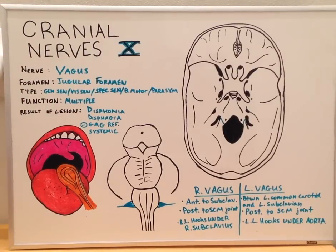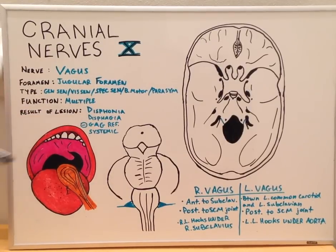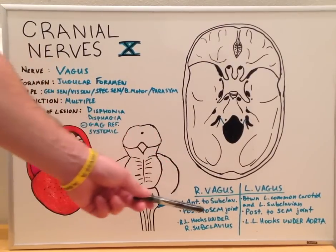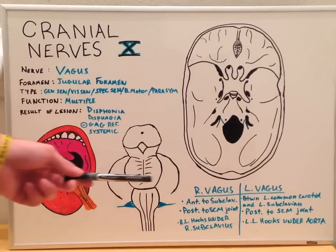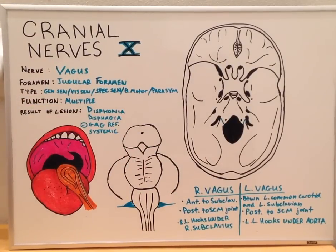It has a multitude of functions that we'll go over, as well as a lot of different lesions such as dysphonia, dysphagia, loss of gag reflex, and systemic results. We will return to the differences in the pathway of the right versus left vagus nerve after we've come back from our next diagram.